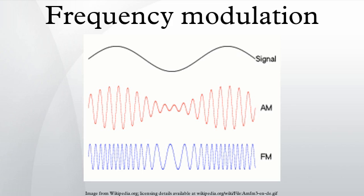If the modulation frequency is held constant and the modulation index is increased, the bandwidth of the FM signal increases but the spacing between spectra remains the same. Some spectral components decrease in strength as others increase. If the frequency deviation is held constant and the modulation frequency increased, the spacing between spectra increases.